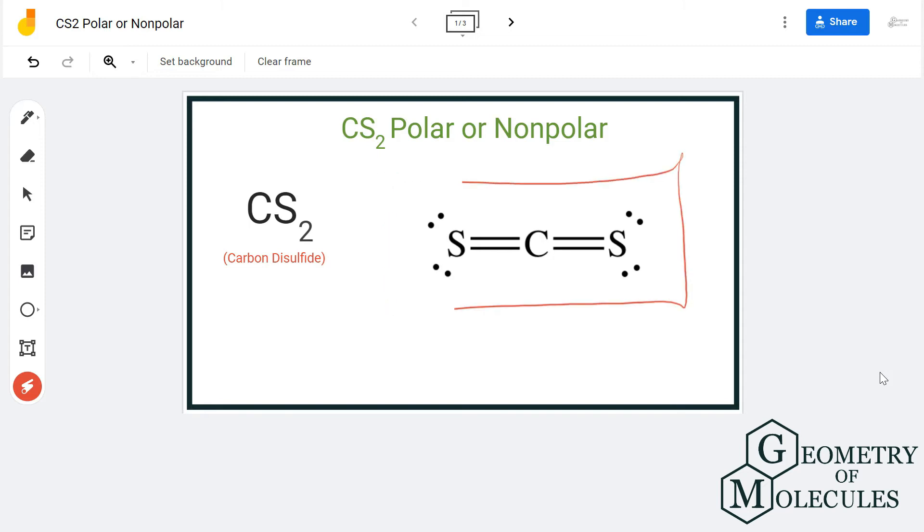Here is a Lewis structure for carbon disulfide, in which carbon is forming double bonds with both the sulfur atoms. The distribution of electrons is quite symmetrical, as well as the molecule is quite symmetrical, as there are two sulfur atoms on both sides of the carbon.